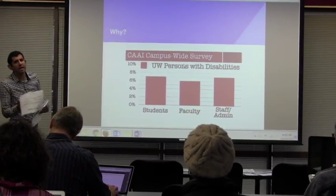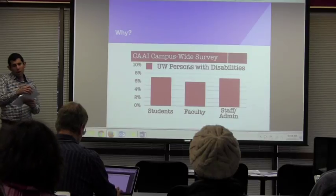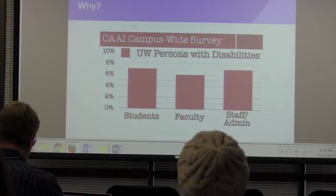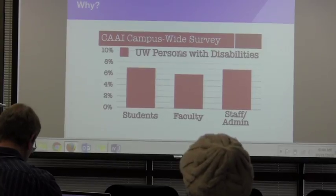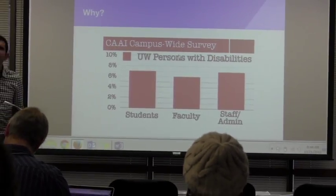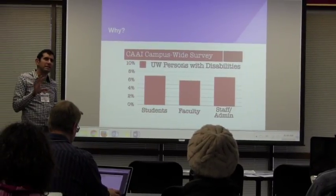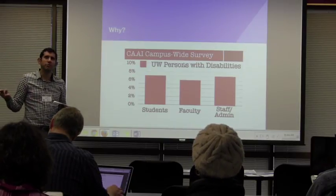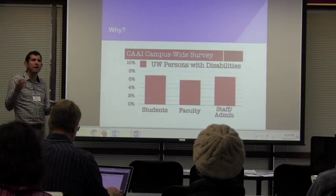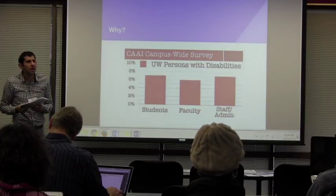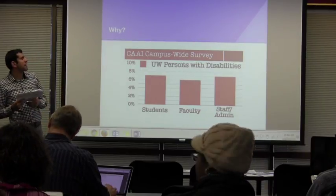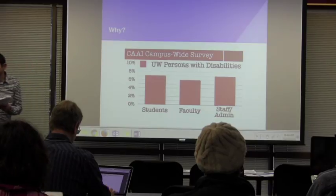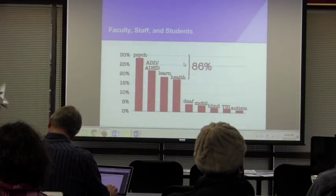Why do we exist and why are we presenting about universal design today? Well, recent surveys revealed that on our campus alone, we have many students, faculty, staff, and administrators who identify as being a person with a disability. Roughly 7% of students on campus identify as having a disability. This does not mean that 7% are all registered with the McBurney Center — disability resource centers usually have a smaller percentage of students who actually register than actually identify on campus. We see roughly 6% of faculty, and at a higher percentage, 7% of staff and administrators identify as having a disability.